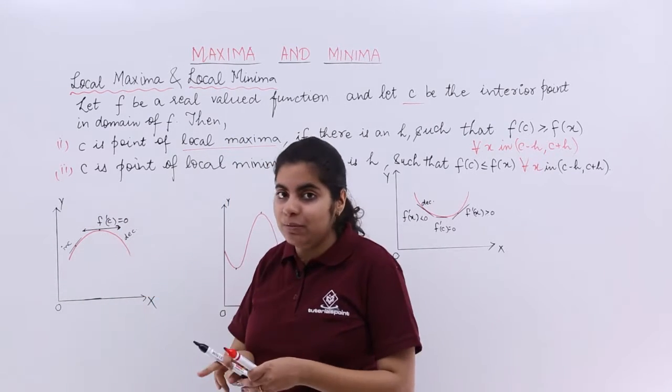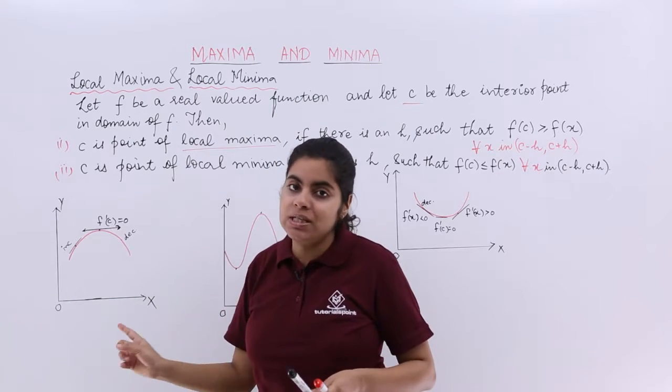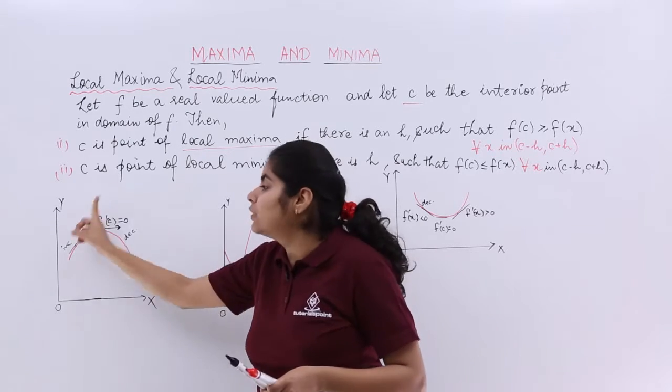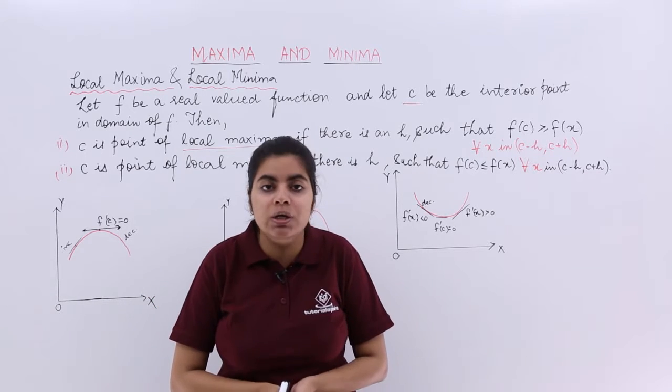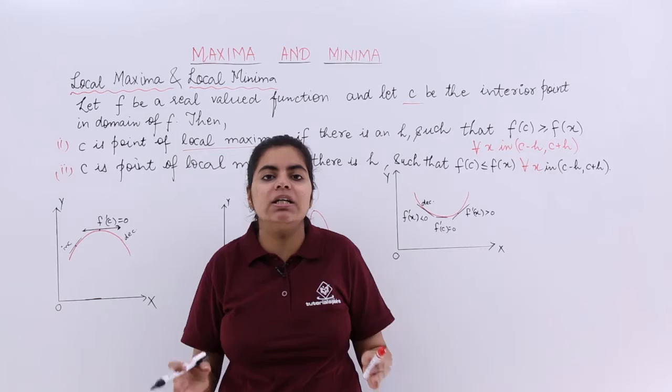Since it attains a peak value, after that it changes its direction, the graph turns. So these peak value points are called as turning points also. T-U-R-N-I-N-G turning points.